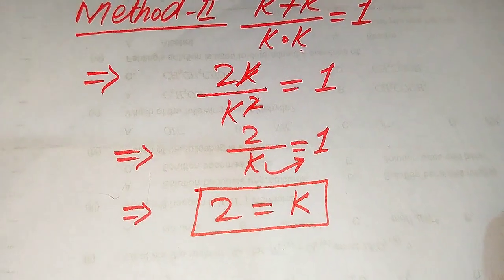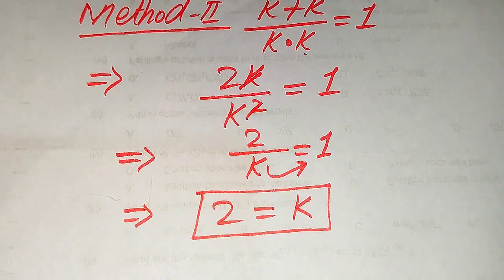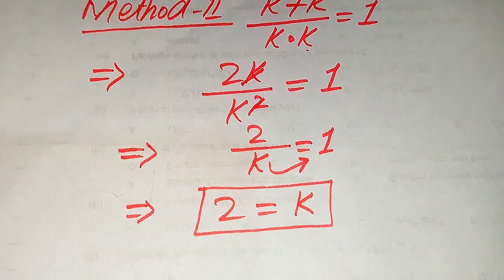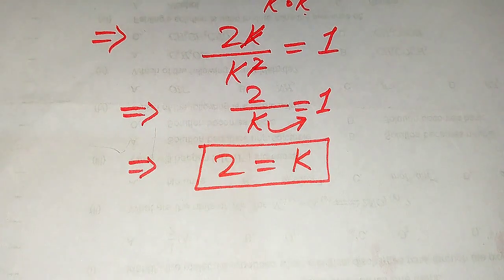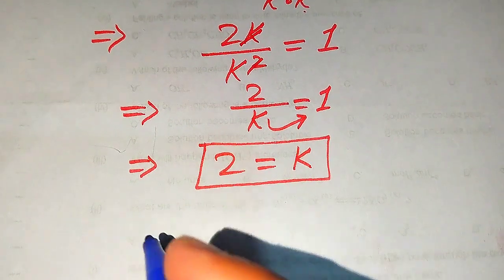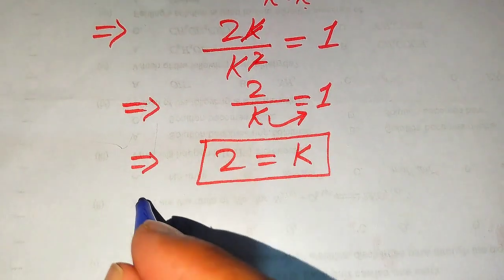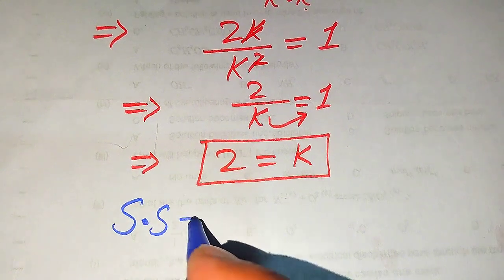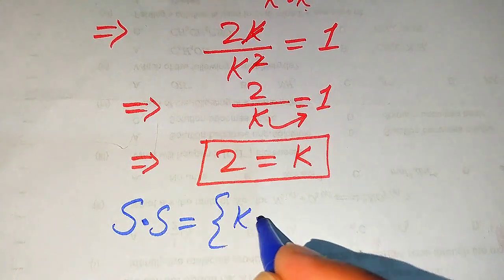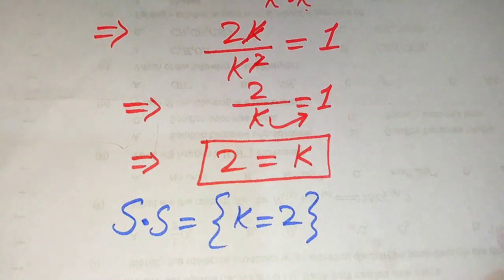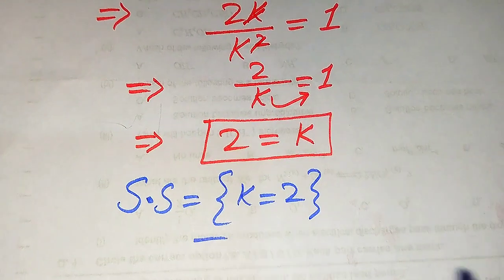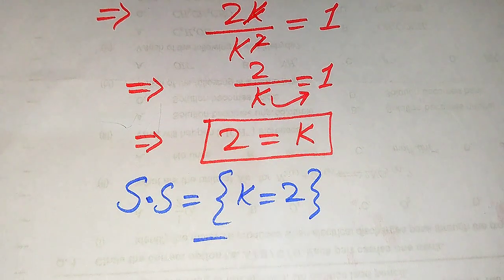From the second method we get only one root: k equals 2. As already verified in the first method, this value satisfies the given equation. Therefore, k equals 2 is the only solution of the given equation. That is our final answer. Thank you for watching — please subscribe to the channel for more videos.